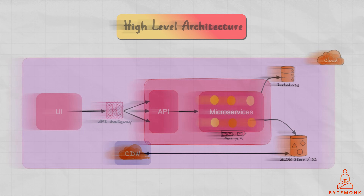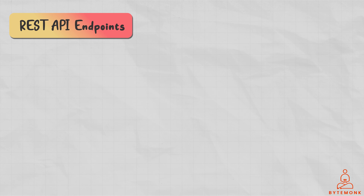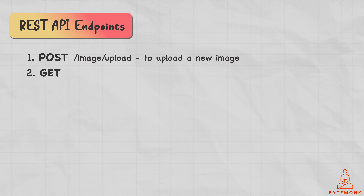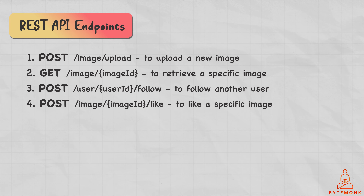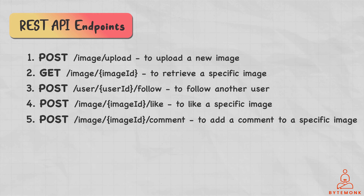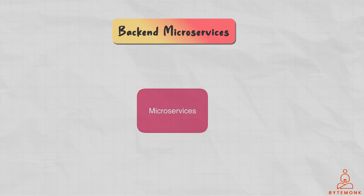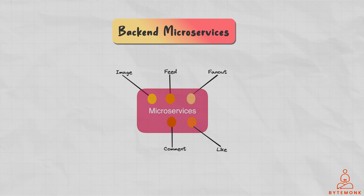Based on these requirements, here are a few REST API endpoints the system should have: a POST endpoint to upload a new image, a GET endpoint to retrieve a specific image, a POST to follow another user, a POST to like a specific image, a POST to add a comment to a specific image, and a GET to retrieve a user's newsfeed. Speaking of backend services, we have an image service, a feed service, a fanout service, a like service, a comment service, a metadata service, and a distributed queue.